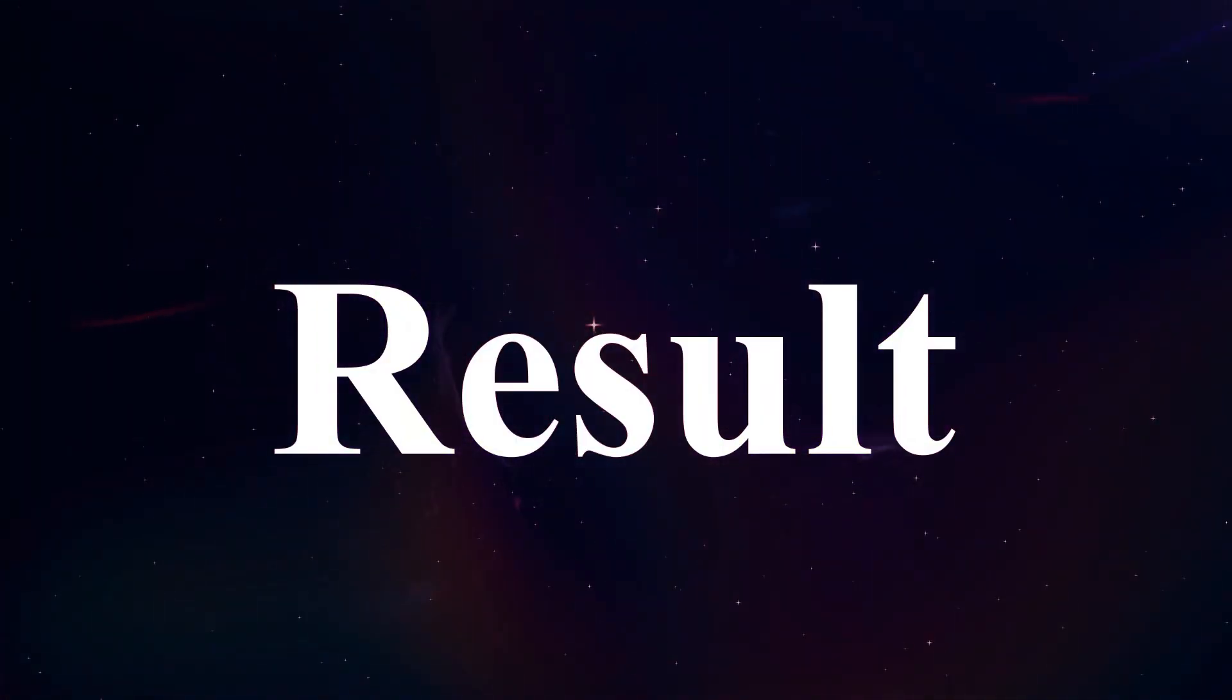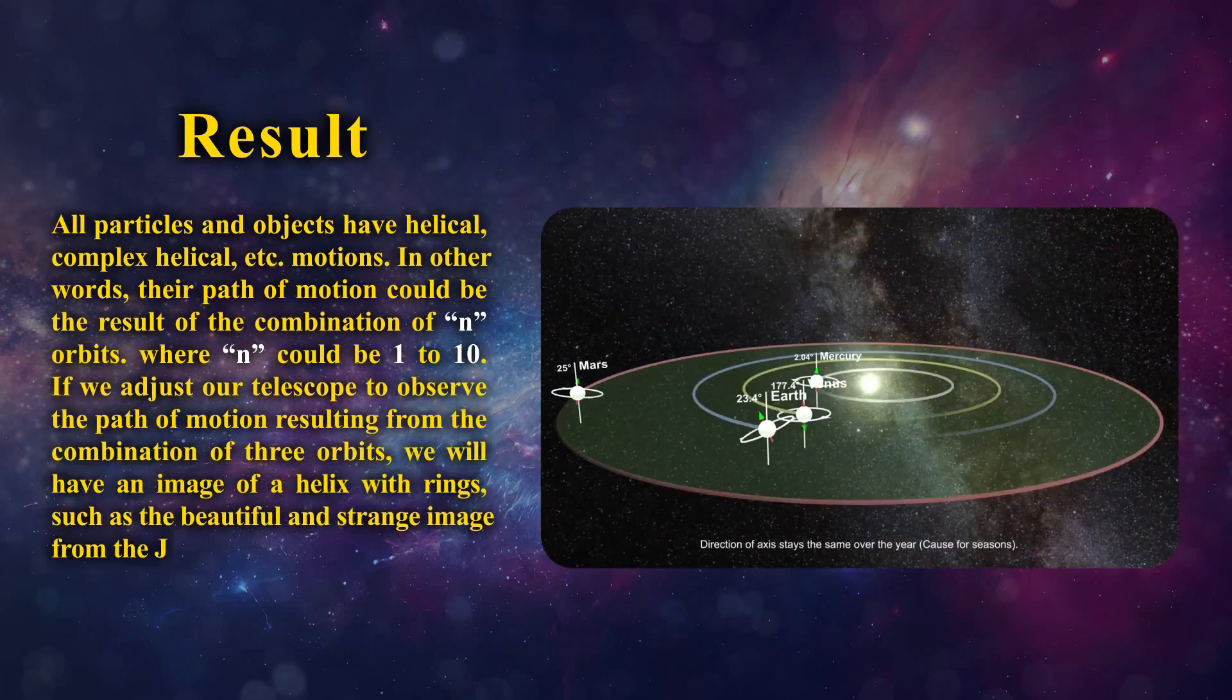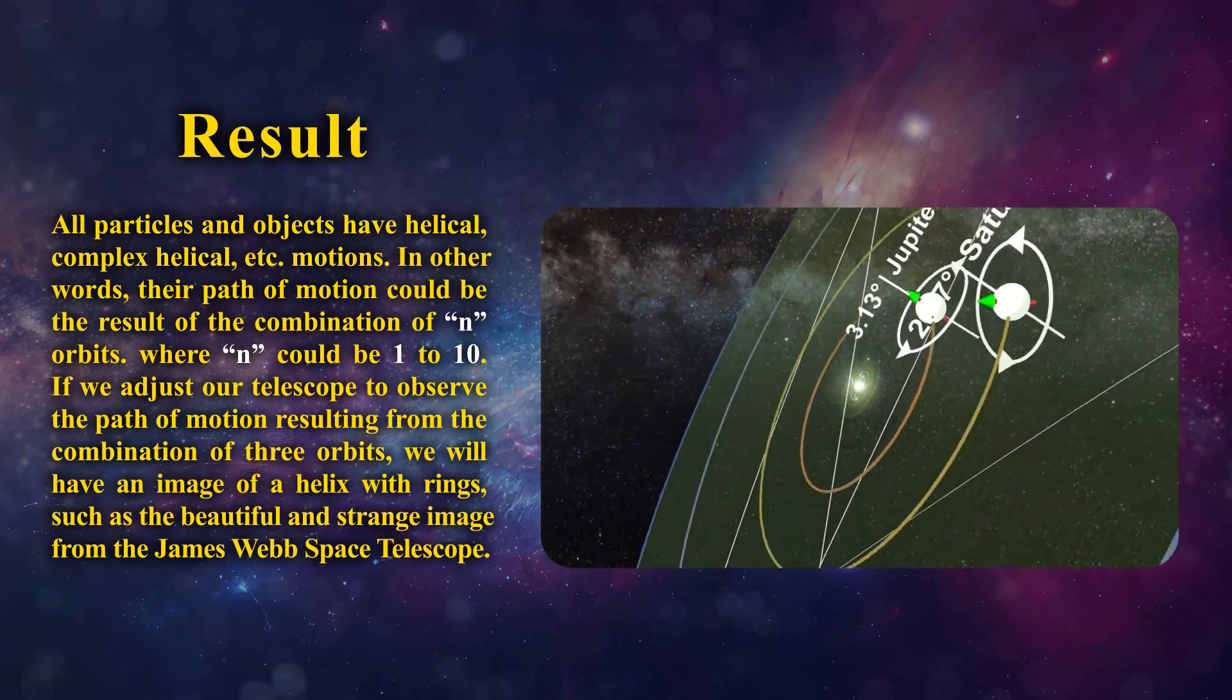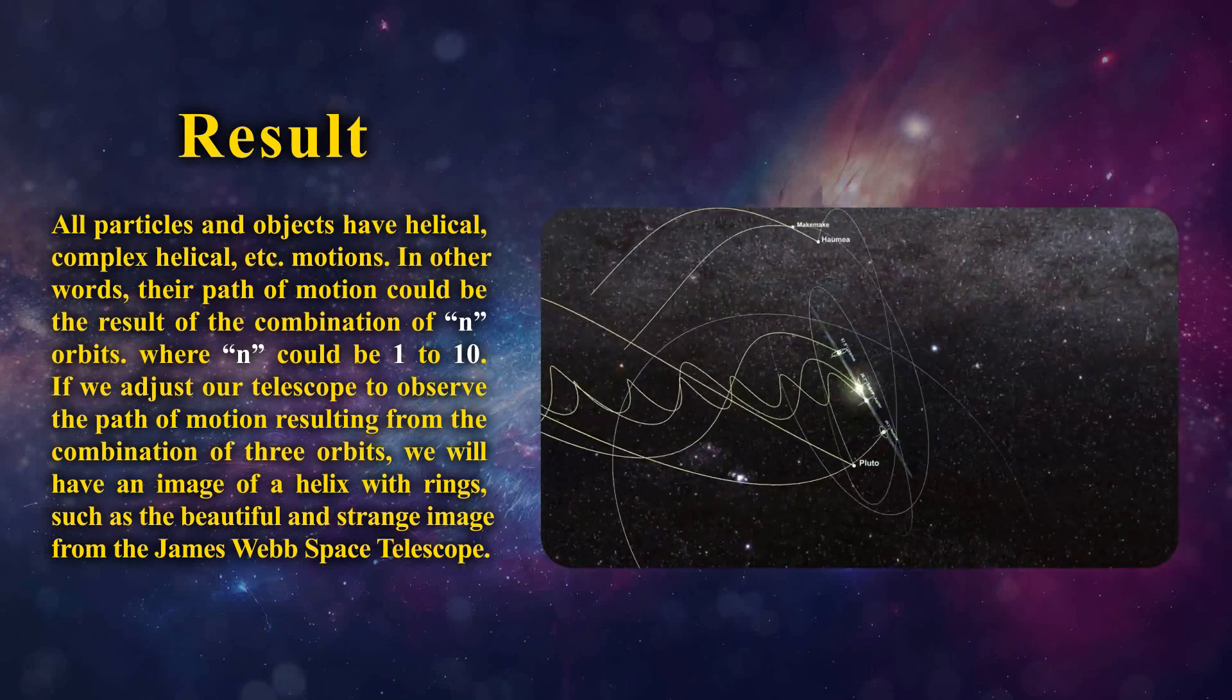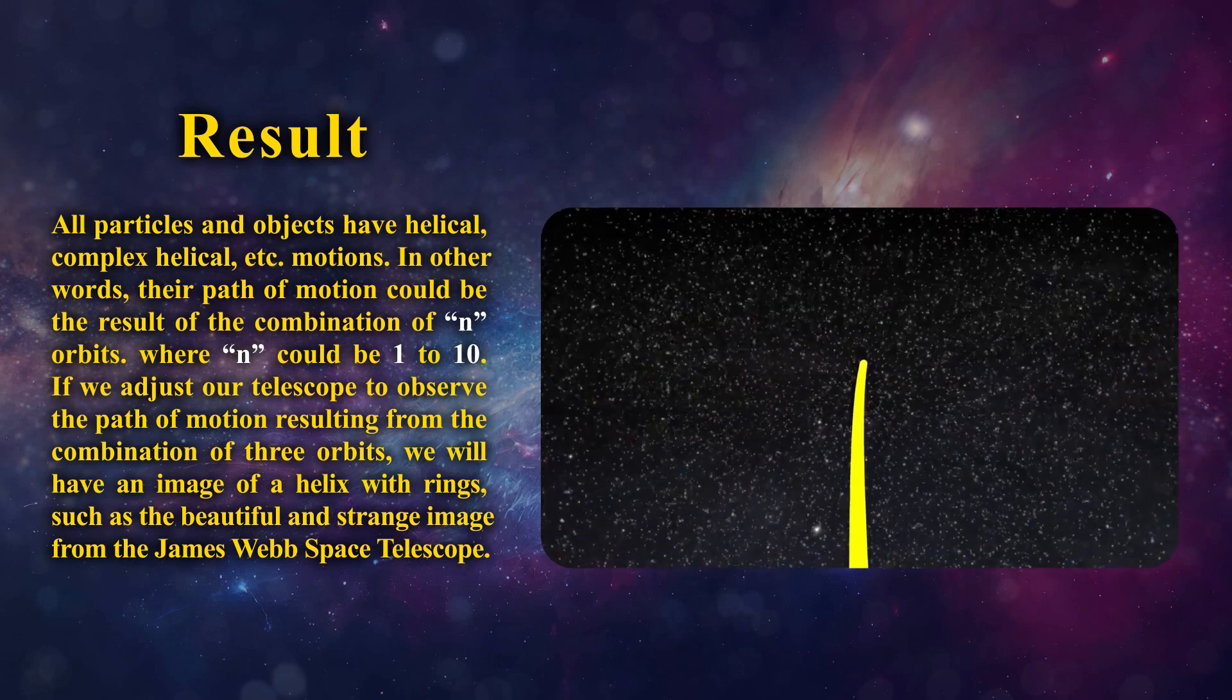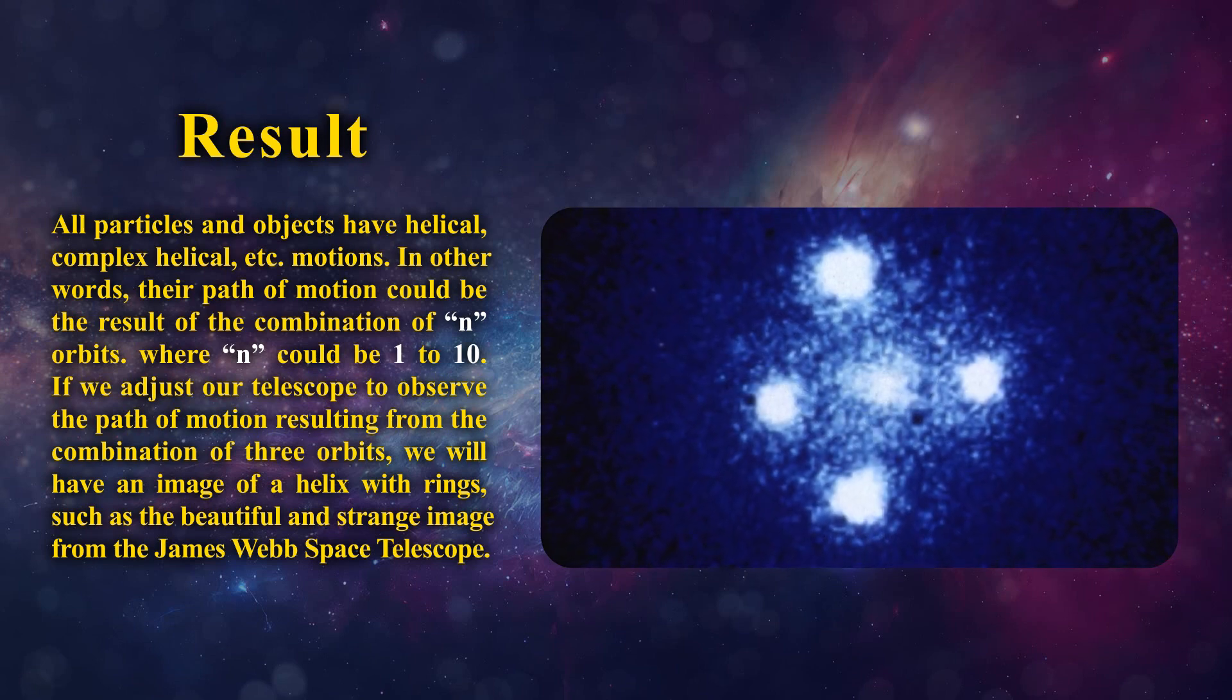Result: All particles and objects have helical, complex helical, etc. motions. In other words, their passive motion could be the result of the combination of n orbits, where n could be one to ten. If we adjust our telescope to observe the path of motion resulting from the combination of three orbits, we will have an image of a helix with rings, in other words, such as the beautiful and strange image from the James Webb Space Telescope.